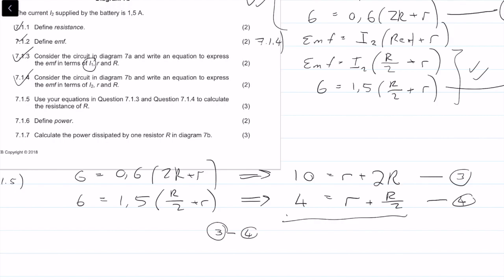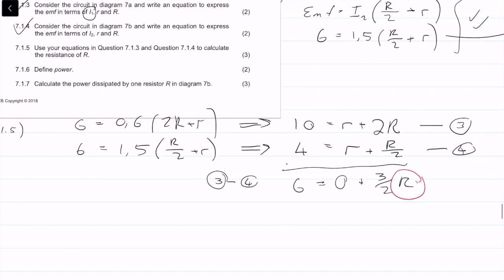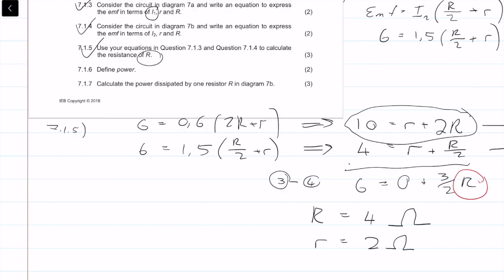So 10 minus 4 is 6 equals r minus r is 0 plus 2R minus one-half r is equal to 3 over 2R. The only unknown here is r, so we can calculate big R, so R is equal to 4 units of ohms. Now that we know that, I'm just going to substitute 4 ohms into equation 3, so we have 10 minus 2 times 4, so small r is equal to 2 ohms. We have our 3 marks.